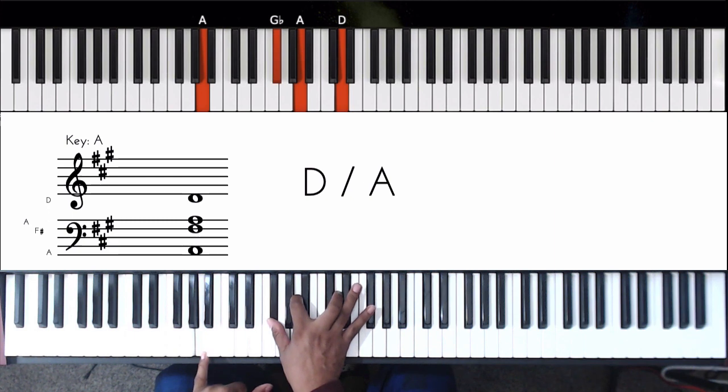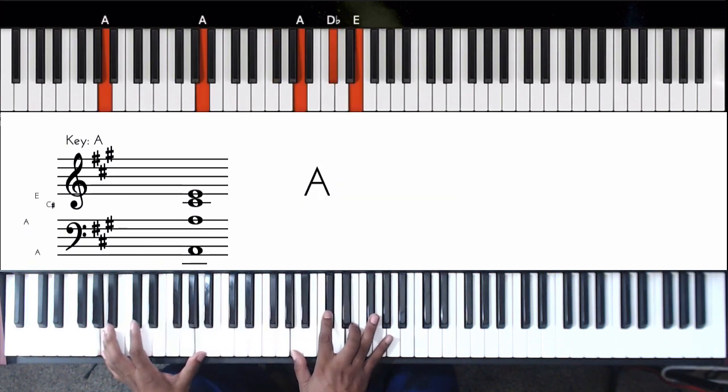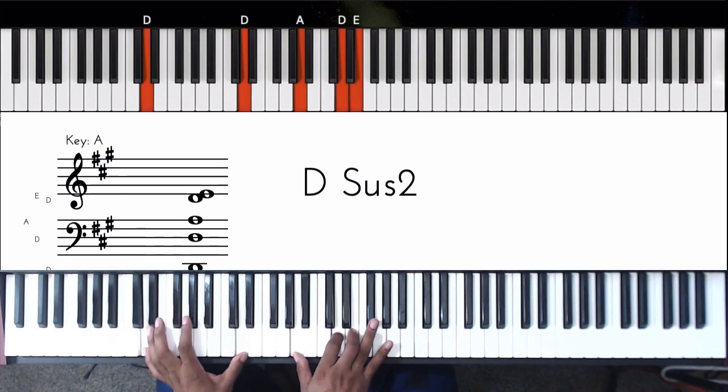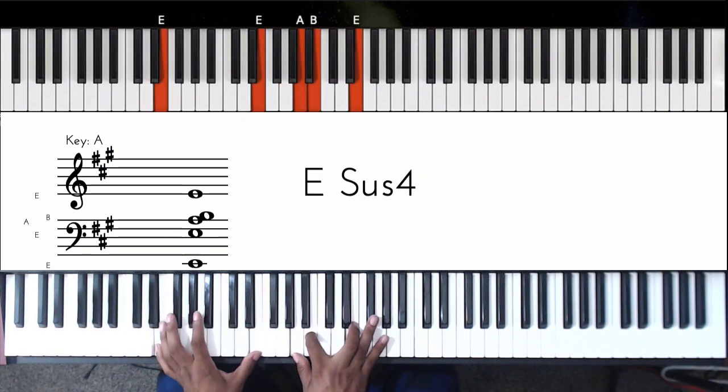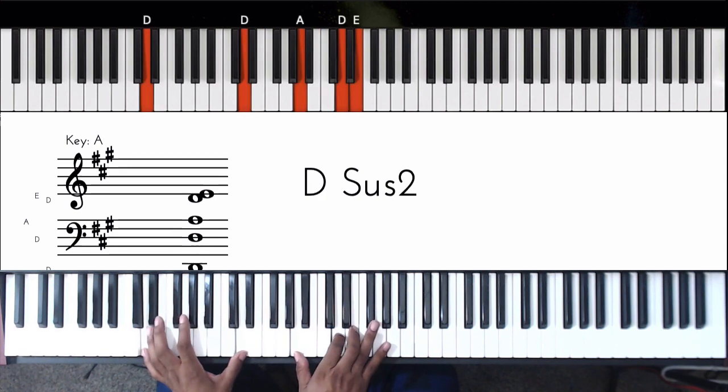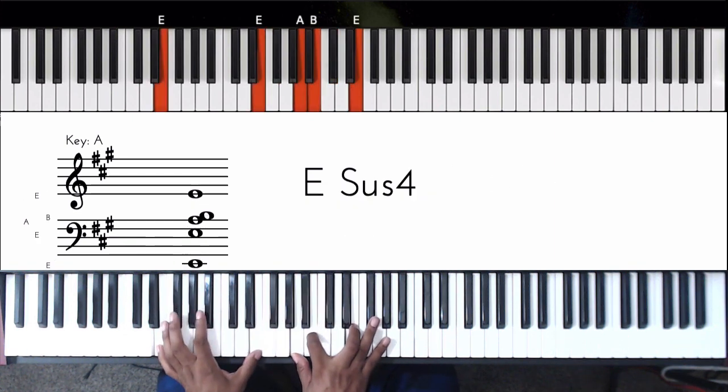And I'm going to call these out: this is D over A, then D major, then A and C sharp over D, and it goes back to A.